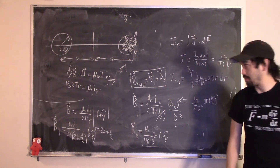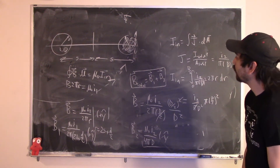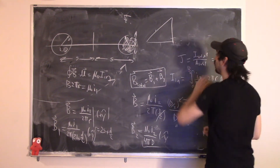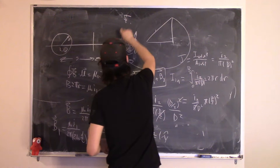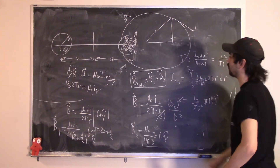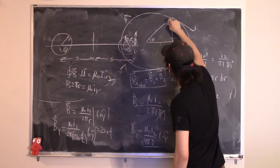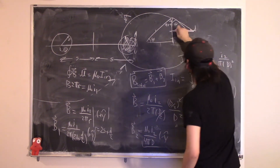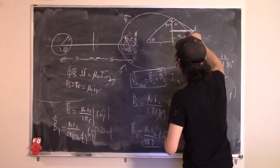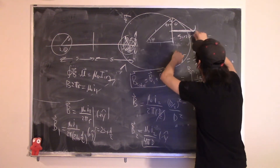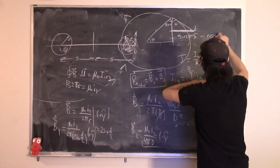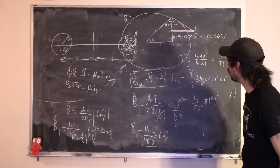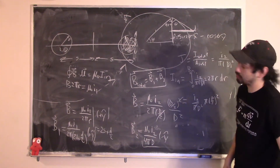A student asks why the x-component used sine of theta and not cosine. For this circle, the magnetic field is tangent to the circle. If theta is the angle at the origin, then the x component of theta-hat is opposite to the angle — making it sine of theta — and the y component is adjacent but negative, so it's minus cosine of theta. That's why theta-hat equals that expression.